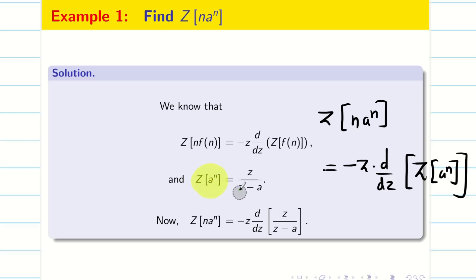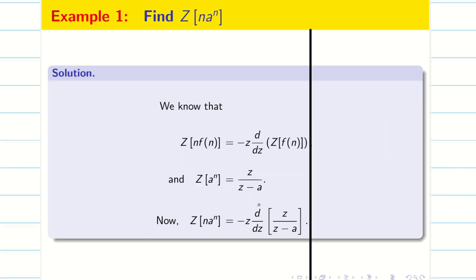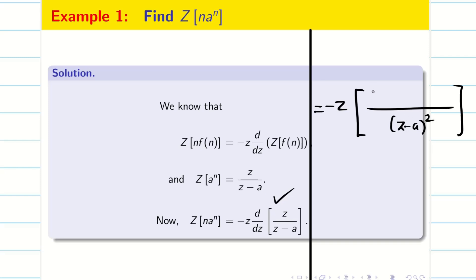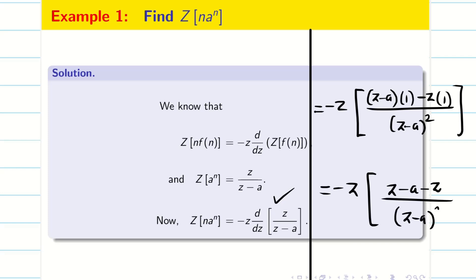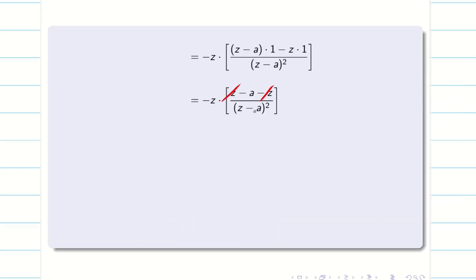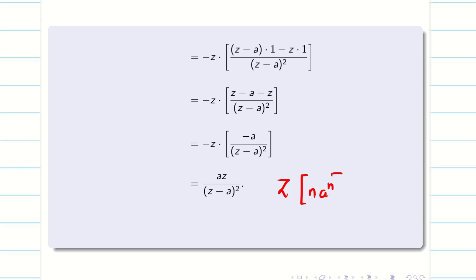We know Z of aⁿ, so substituting we get this expression. Next, we differentiate using the U by V rule. The denominator is (Z minus a) whole square. The numerator is (Z minus a) into differentiation of Z, which is 1, minus Z into differentiation of (Z minus a), which is again 1. Simplifying, minus Z times (Z minus a minus Z) divided by (Z minus a) whole square. Z and Z cancel, and multiplying minus Z gives aZ divided by (Z minus a) whole square. Therefore, Z of n into aⁿ is aZ divided by (Z minus a) whole square.